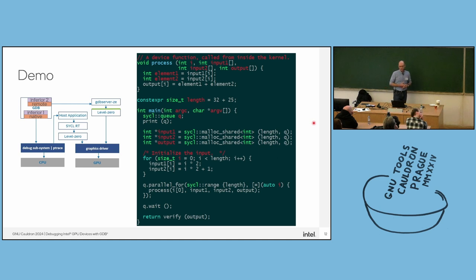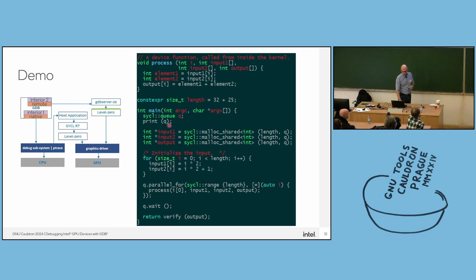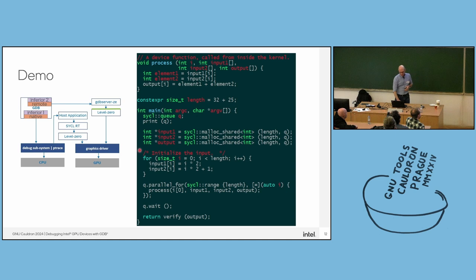The code we will use is the vector addition example shown earlier. Here is main: we create a queue, print the queue, and create three buffers. These are allocated as unified shared memory, which means they're available at both host and device memory — the user doesn't have to explicitly copy data to GPU memory, this is handled by the runtime. We initialize the input arrays, do a parallel for, and the process function is given here. I'll insert a breakpoint inside this kernel so we stop inside the GPU.